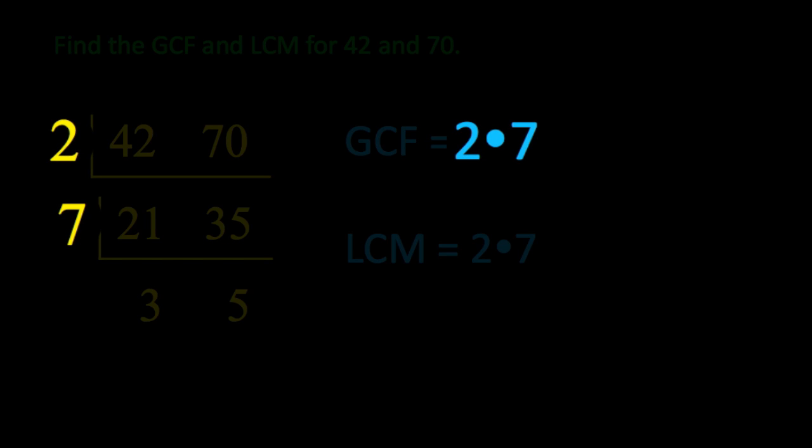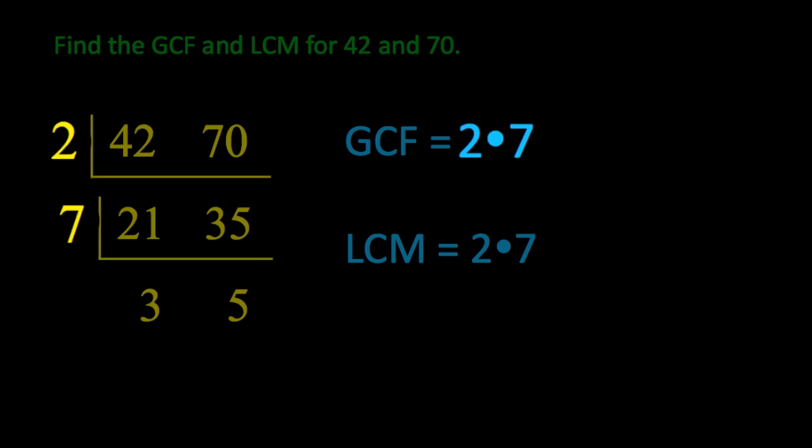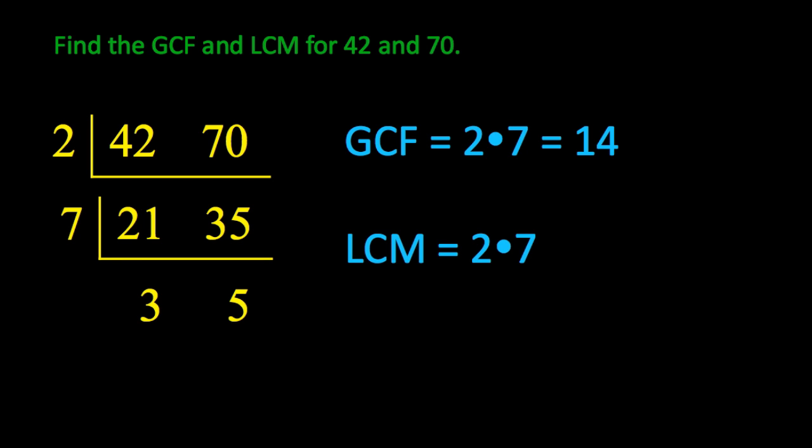That would be the 2 and the 7. So, you've built your greatest common factor. Your 2 times your 7 is 14. And so, your greatest common factor is 14.